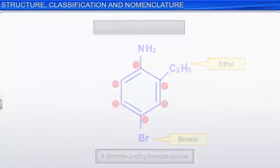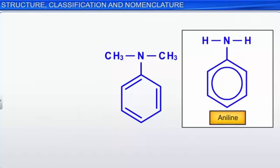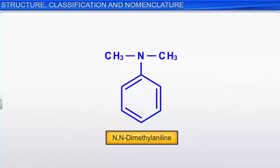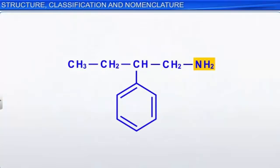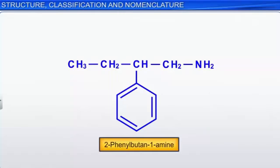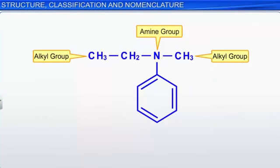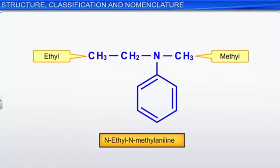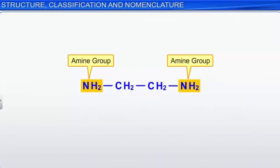Now try to name these compounds. In the first compound, since two methyl groups are present as side chains on the N atom and the main compound is aniline, it can be named N,N-dimethylaniline. In the second structure, an NH₂ group is attached to an alkyl group and a benzene ring is present as a side chain; the compound can be named 2-phenyl-butan-1-amine. In the third structure, an amine group is present on the benzene ring with alkyl groups as side chains, so it can be named N-ethyl-N-methylaniline. In the fourth structure, as two amine groups are present on two adjacent carbon atoms, the compound can be named ethane-1,2-diamine.